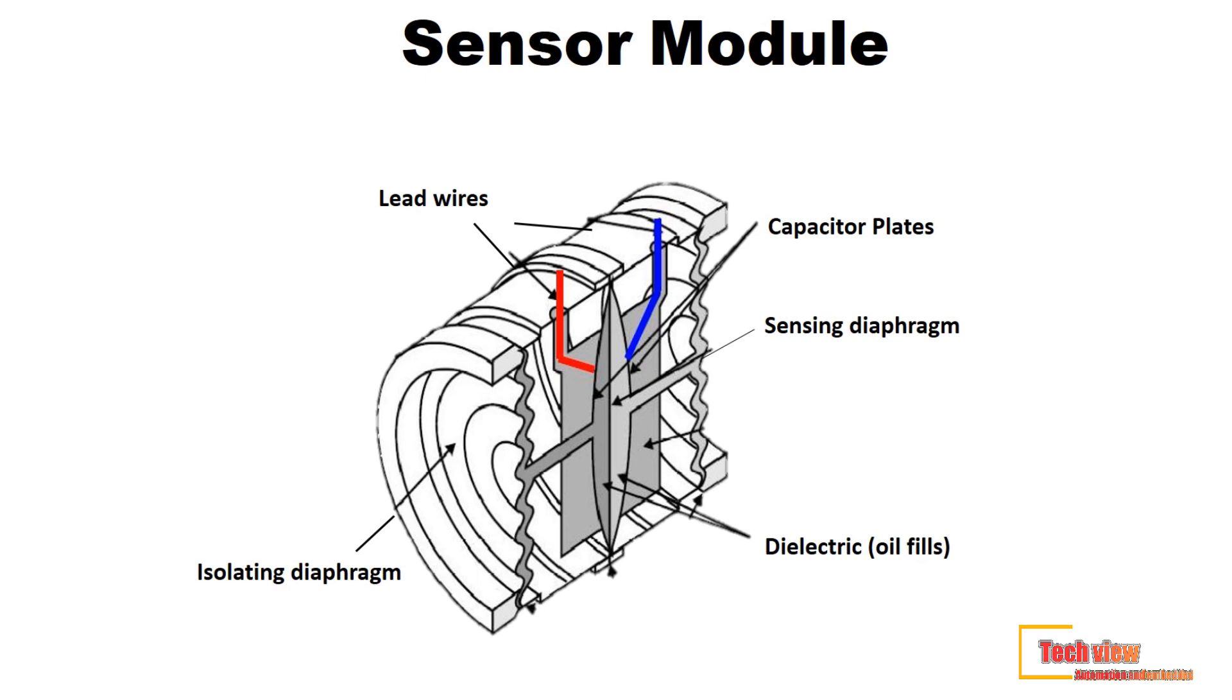Pressure applied to capacitive cells will produce a change in the capacitance of the sensor. This change will affect the oscillator frequency, and the pressure transmitter will detect this change. Then the transmitter translates this data into a standard output signal that we can read.